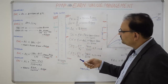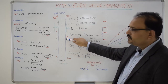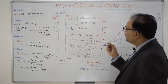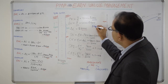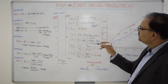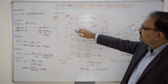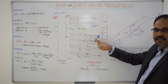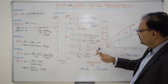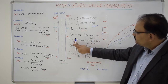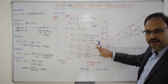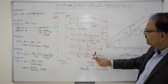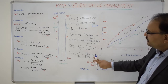Now we can assume different scenarios with the same example. In one scenario, had the project completed 11 kilometers of the road after three weeks, the Earned Value in that case would have been $6,600, which is more than the Planned Value but less than the Actual Cost. The Schedule Variance would have been positive, showing the project is ahead of schedule, and similarly SPI would have been greater than one. Cost Variance still would have been negative because $8,000 is more than $6,600, and CPI in that case would have been again less than one.